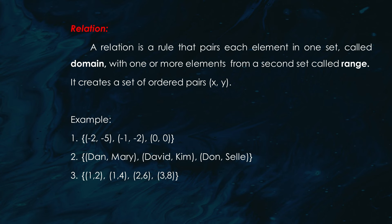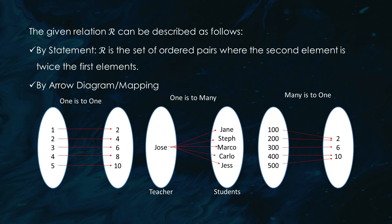Now, how do we describe these relations? We can do it in a few ways. One way is by using a statement like 'the set of ordered pairs where the second element is twice the first element.' Another way is by using an arrow diagram, which visually maps out these relationships.